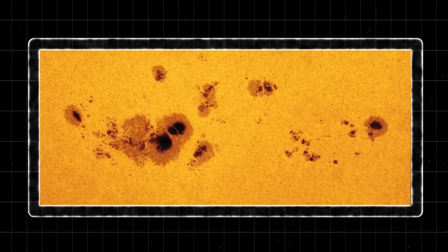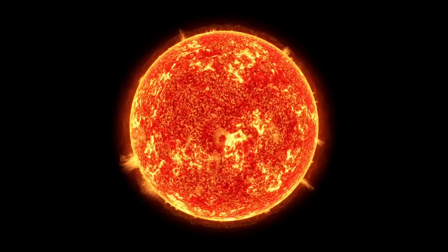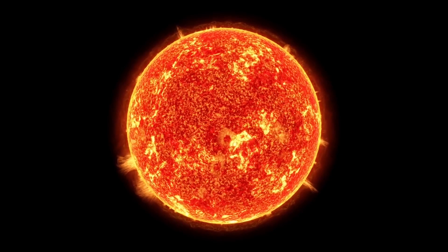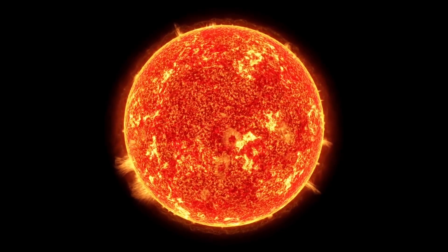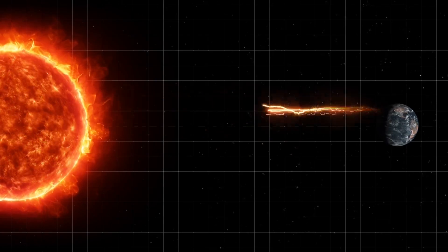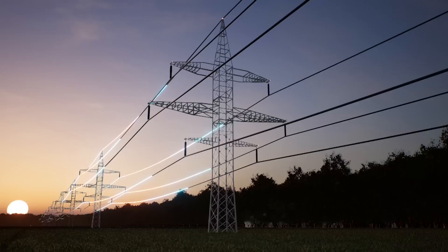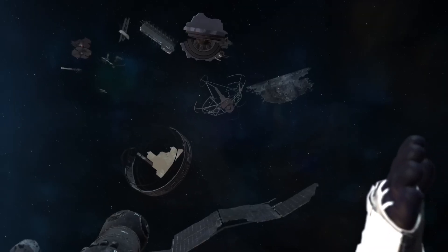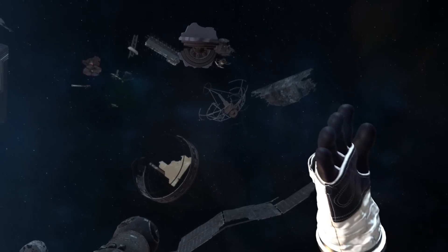Coronal mass ejections, on the other hand, are gigantic clouds of charged particles hurled into space at millions of miles per hour. When these particles collide with Earth's magnetosphere, they can cause geomagnetic storms, which can interfere with everything from satellite operations to power grids.